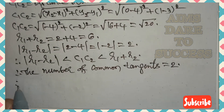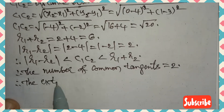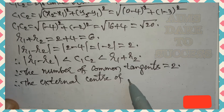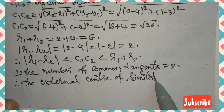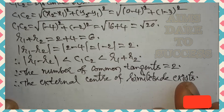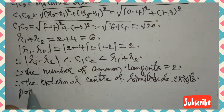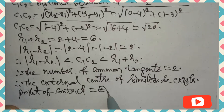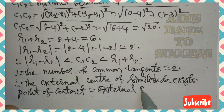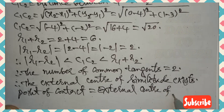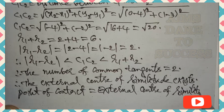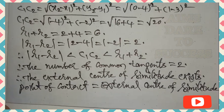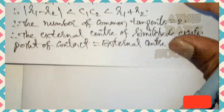Since this condition is satisfied, the external center of similitude exists. The point of contact equals the external center of similitude. The external center of similitude formula comes from the trisection formula from 10th class geometry — for external division, you use a minus symbol.